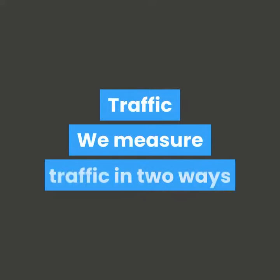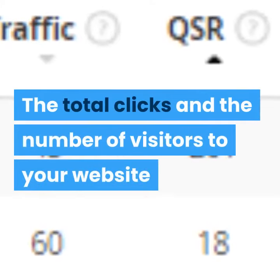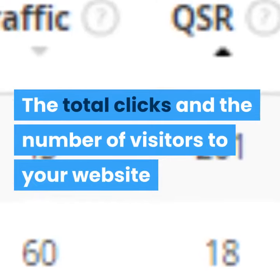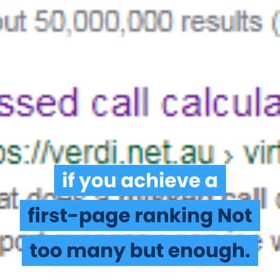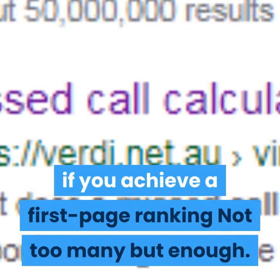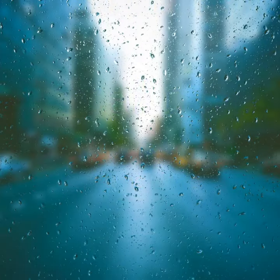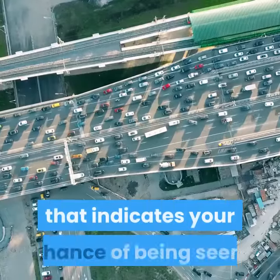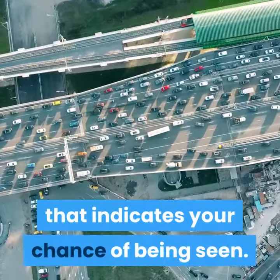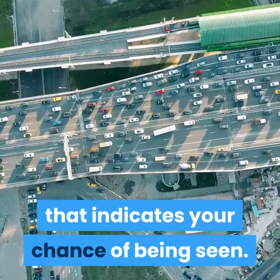With traffic, we measure it in two ways: the total number of clicks, and the number of visitors to your website if you achieve a first-page ranking. You need to have just enough traffic but not too much. The third metric is your SEO score, which is a score based on traffic versus competition that indicates your chance of being seen.